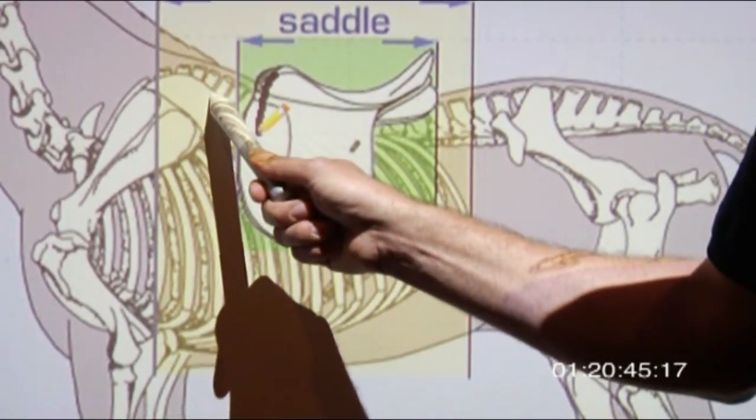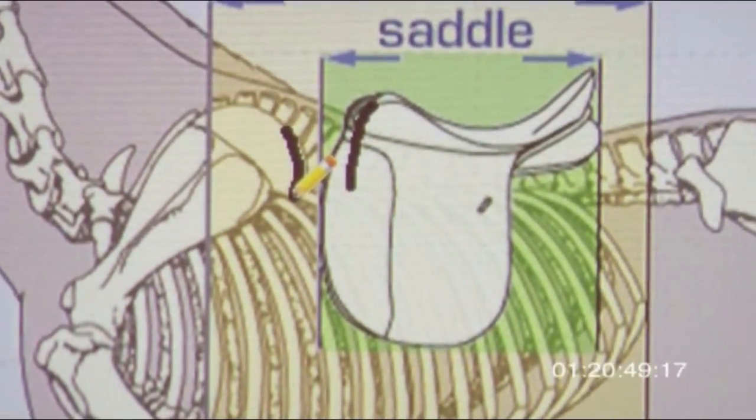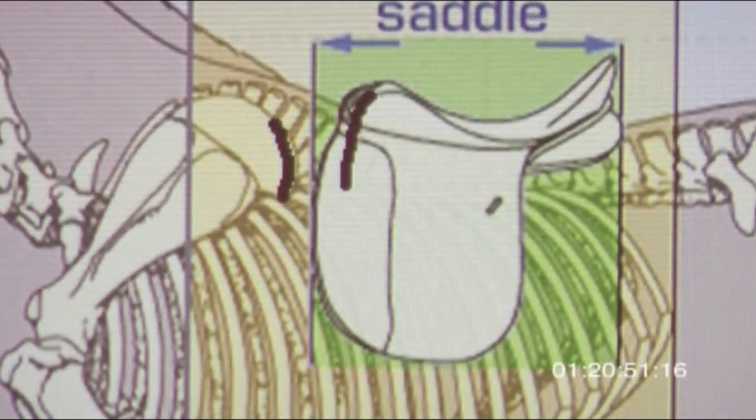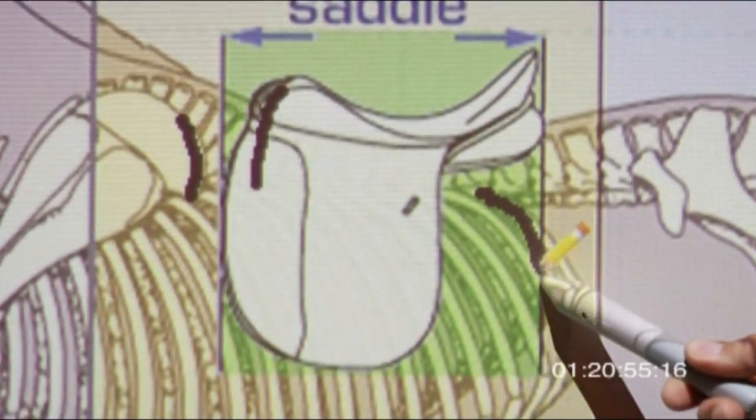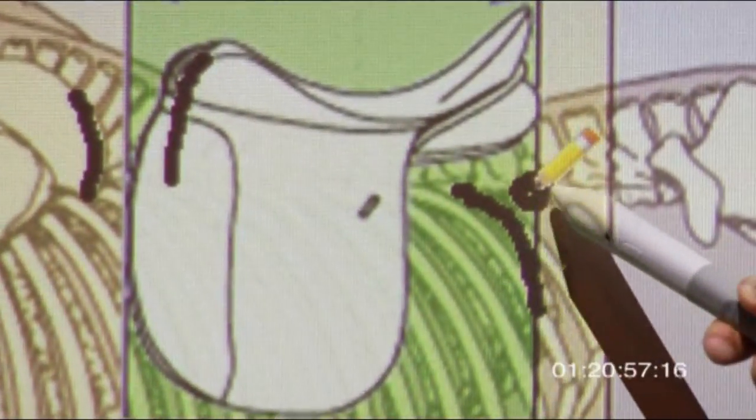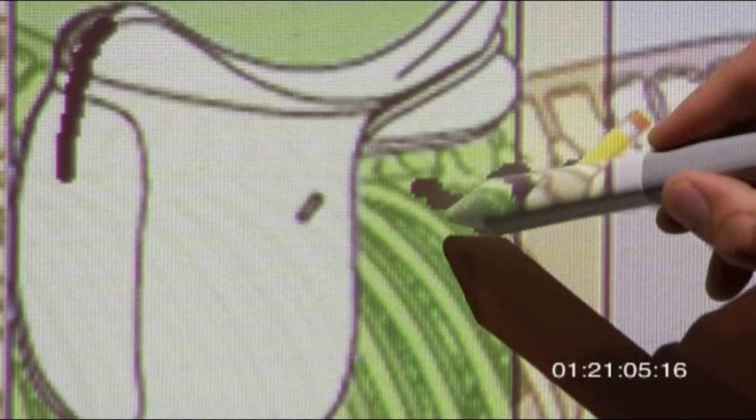You would like to have the saddle sitting against the edge of the shoulder. If you put the saddle that far back, you see where we have the last rib is right here, and right here is where the lumbars are - a very sensitive area. If we move the saddle more forward against the shoulder blade, the saddle would not put pressure on the lumbar area.